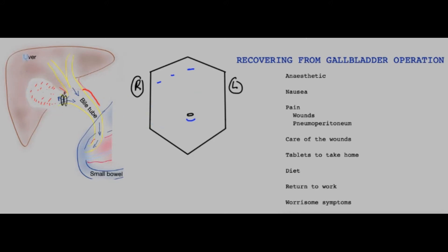This is a cartoon of the inside of the abdomen once the gallbladder has been removed. This is the liver — this is where the gallbladder used to live. There are two clips on the cystic duct, which would have connected the gallbladder that has now been removed, and there's a smaller clip on the artery. This is the main bile duct that takes bile down, and this is the small bowel.